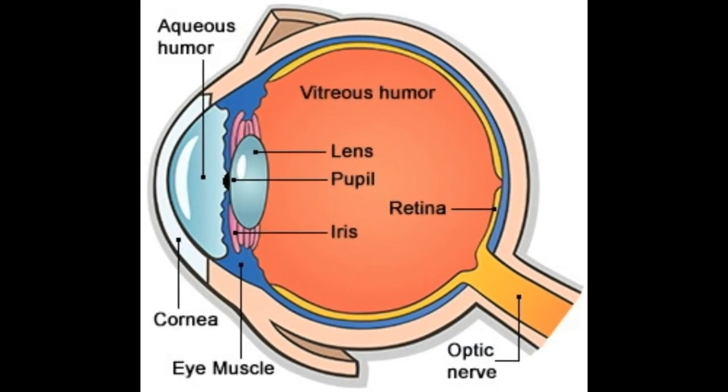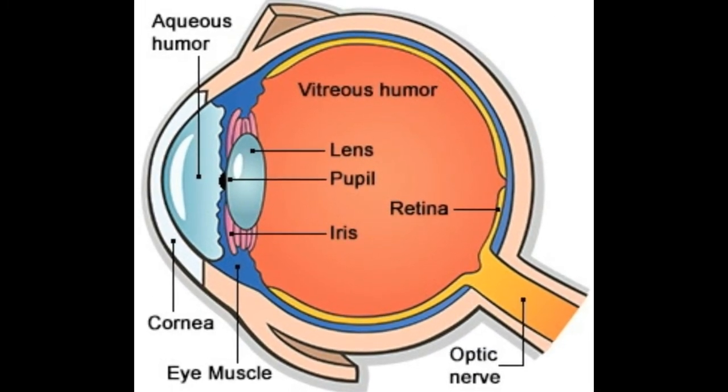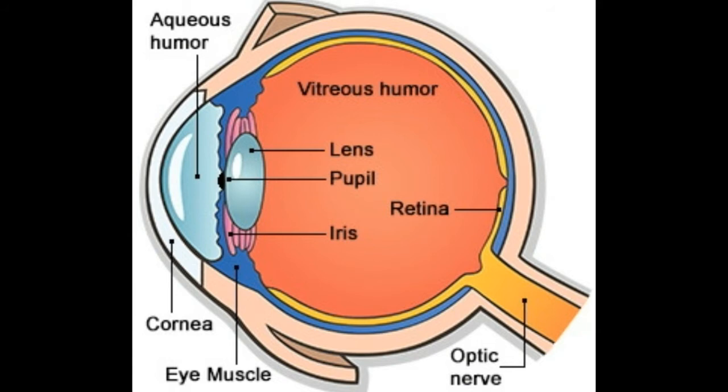Hello friends, hope you all are fine. Today I'm going to discuss a detailed study of the parts of the human eye and their working. This article gives you information on the parts of the human eye, its functions, and the working strategy of the eye as a whole. Our eyes are the doorway to the external environment and clearly the most important of the sense organs. They play a pivotal role in our day-to-day existence. The eye receives light from the outside world and converts it into electrical signals that are transported to the brain and perceived as an image.